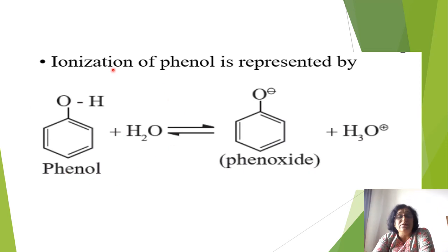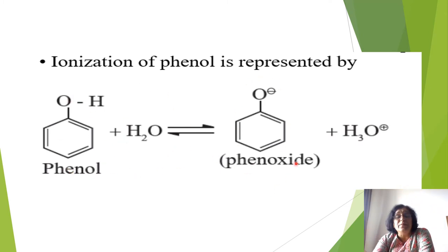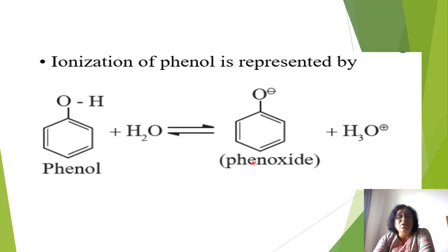In aqueous solution, phenol ionizes: phenol + H₂O → phenoxide ion + hydronium ion. According to Lowry-Brønsted theory, phenol is an acid — it donates a proton to water (the base), forming phenoxide (conjugate base) and hydronium ion (conjugate acid). The phenoxide ion is resonance-stabilized by delocalization of the negative charge.